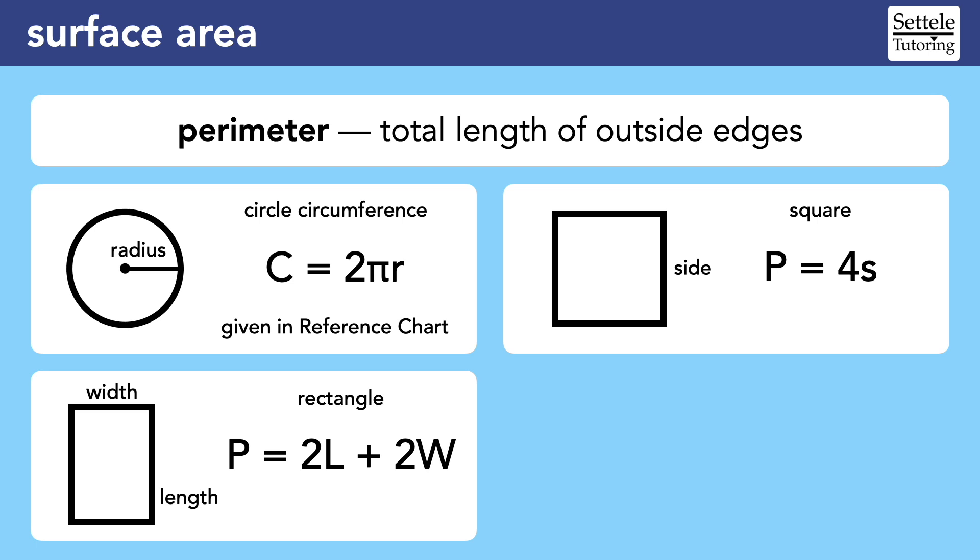Plus, it's not very long before we get to situations where formulas don't exist. For something as simple as a triangle, we really have no choice but to find the perimeter by adding up all the sides. There's no formula that would provide a shortcut.